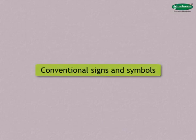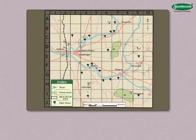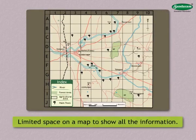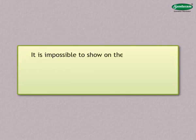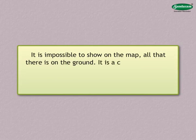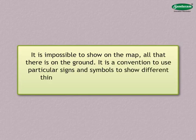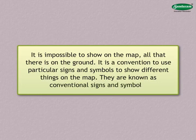Conventional signs and symbols. We obtain a lot of information in the study of geography, but there is limited space on a map to show all this information. This is a significant drawback in drawing maps. It is impossible to show on the map all that there is on the ground. It is a convention to use particular signs and symbols to show different things on the map. They are known as conventional signs and symbols.